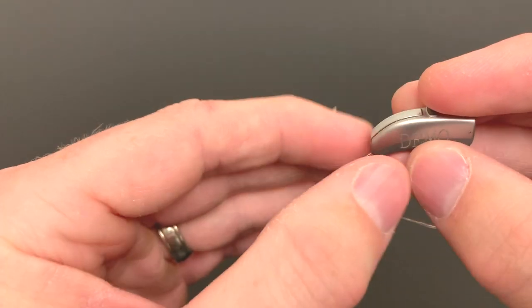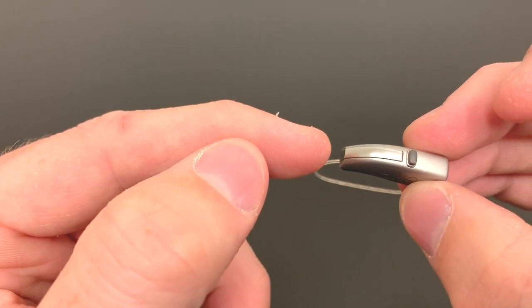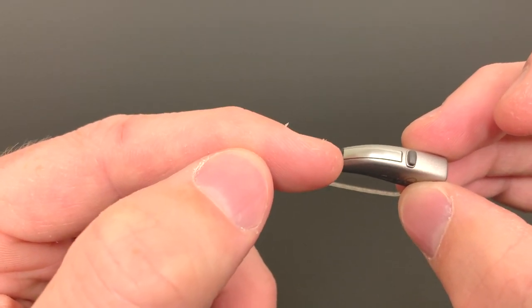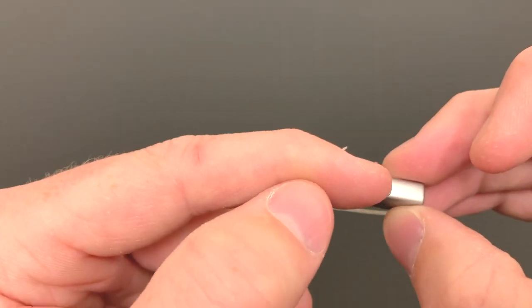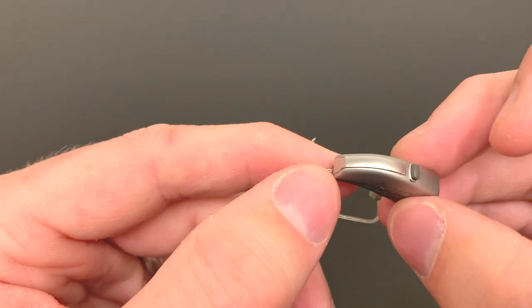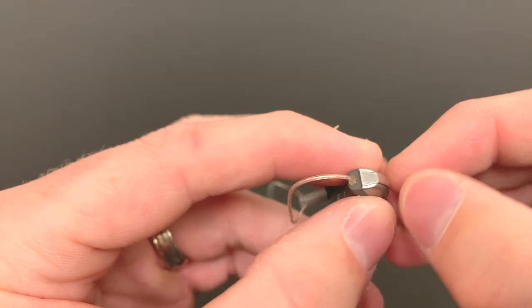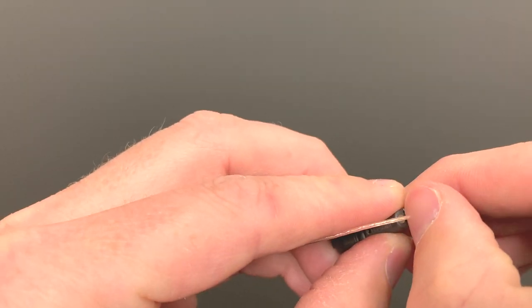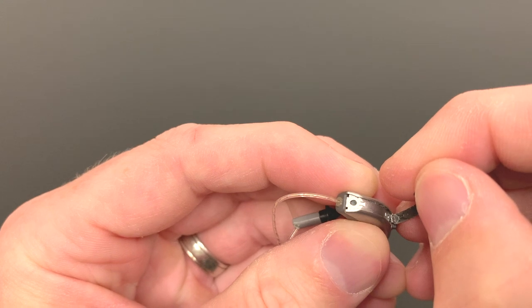You close the battery door and go around to the top. Microphones on most of these receiver in the ear or receiver in the canal hearing aids are here at the top. There's one here at the top and one here at the back. In this particular style of hearing aid, the microphones are covered by a protective cover. And if we were to take that protective cover off like so, you would see underneath that there's the microphone ports there.